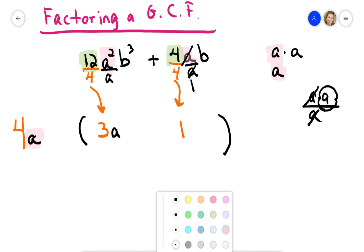And then I'm going to move on to the next letters, which are the B's. I have a B cubed and a B to the first. So remember, B cubed is B times B times B, and B to the first is just a B. So they both have just one B in common. So that's what I'm going to factor out, a B.